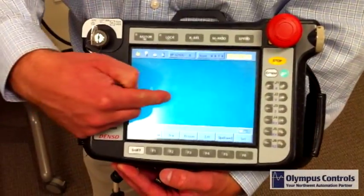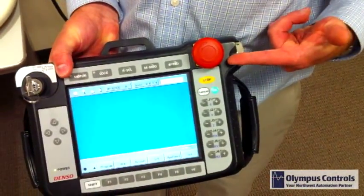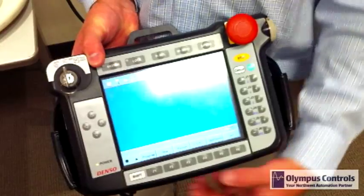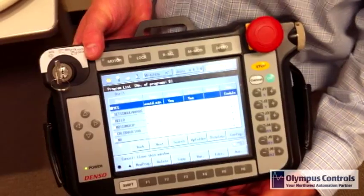The pendant has your typical creature comforts, such as a touch screen, a three position dead man switch, and a convenient E stop. The robot can be programmed via the pendant or through offline software called Wincaps.